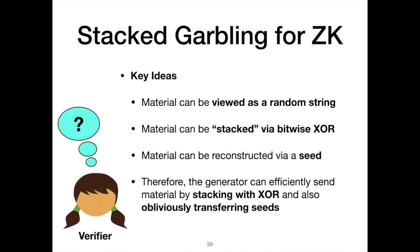This was stacked garbling for zero-knowledge. The key ideas are using material as random strings that can be stacked together with bitwise XOR, and viewing material as the expansion of a pseudo-random seed. By using these two ideas together, the circuit verifier can efficiently send circuit material by stacking material from multiple branches and then obliviously transferring seeds. This gives us communication improvement proportional to the number of branches because we're sending only enough material for one branch rather than B branches.